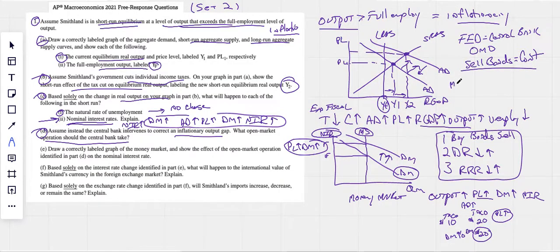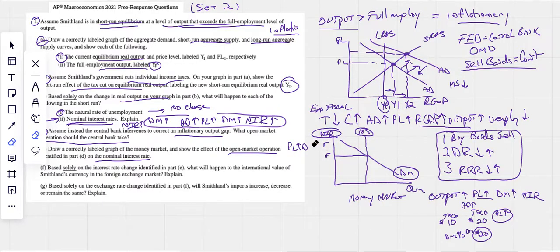We know selling bonds makes the money supply go down. When the money supply goes down, it shifts to the left. Do we have to draw it? Oh, they do want us to draw it. Showing the effects of the open market operation on the nominal interest rate. And recognize that when they sell bonds, that money supply is going to decrease. That means it's going to shift to the left. As that money supply shifts to the left, we can see we have higher interest rates. We went from one to two. Less money in the banks drives up nominal interest rates.